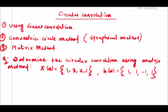In the previous session we saw how to determine circular convolution using the concentric circle method, also called the graphical method. In this session we will see how to determine circular convolution by the matrix method. The matrix method used for linear convolution is completely different from the matrix method for circular convolution, so we will have a different approach.